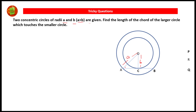We know that the radius at the point of contact is perpendicular to the tangent, and therefore OC is perpendicular to AB. AB is a chord of the bigger circle and OC is perpendicular to that chord. The perpendicular from the center of the circle to the chord bisects the chord, and therefore AC is equal to BC.